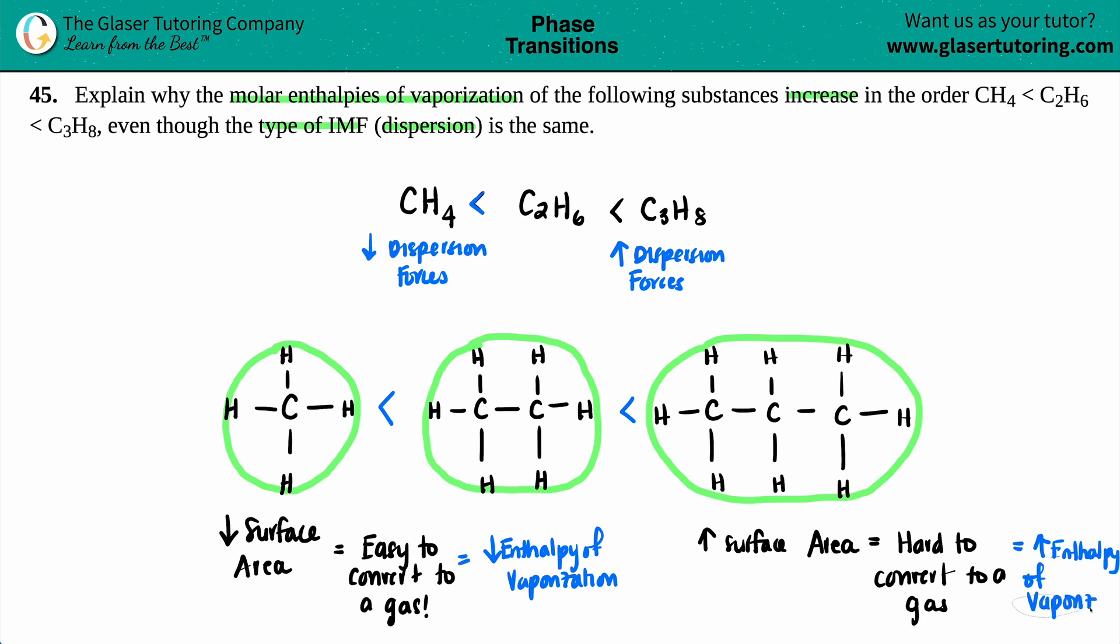Now, also, I just want to point out here that even though all three of these are nonpolar, that's why they only have dispersion forces, you can go by the increased surface area, but also it plays hand in hand with the molar mass. If you counted up the molar mass for just CH4 versus C2H6 versus C3H8, you have way more molar mass on the periodic table than if you had for CH4. So lower the surface area, lower the molar mass. And the same thing here, highest surface area, highest molar mass.